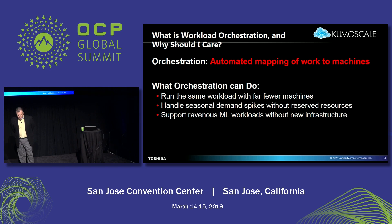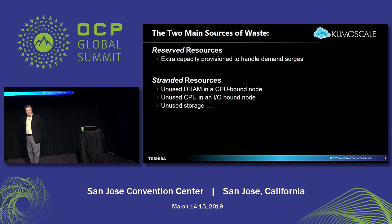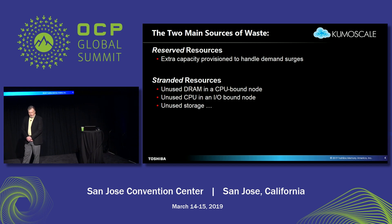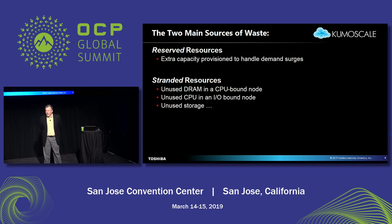They have been measured by Google and others, and they are big. So what are the sources of waste that we are going to get rid of? There are two: reserved resources, which is extra capacity that you provide to handle demand spikes; and stranded resources, which is tougher to understand. Stranded resources are the DRAM that is not used by a CPU-bound application, the CPU capacity that's not used by a memory hog application, and so on.